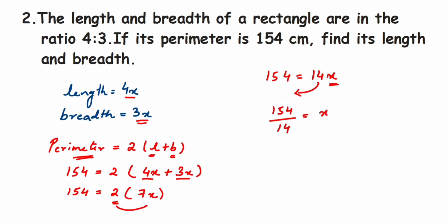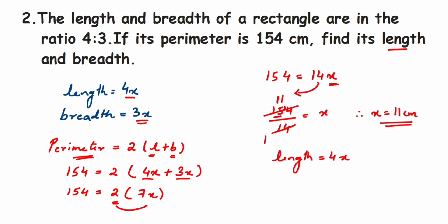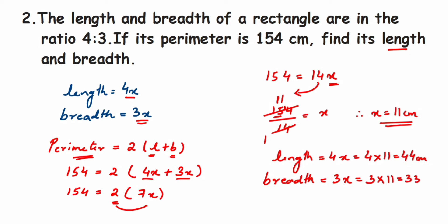Cancelling 154 by 14, we get x = 11 centimeters. Now, length equals 4x = 4 times 11 = 44 centimeters. Breadth equals 3x = 3 times 11 = 33 centimeters. So we're done with the second question.